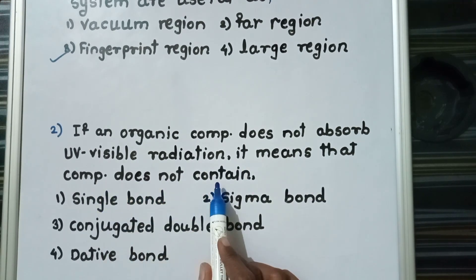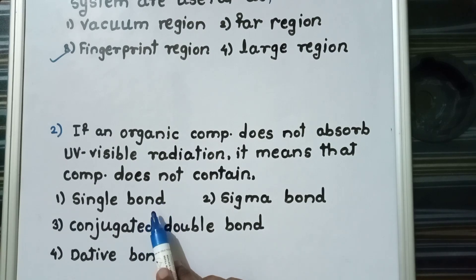Options are single bond, sigma bond, conjugated double bond, and dative bond. The answer is conjugated double bond.